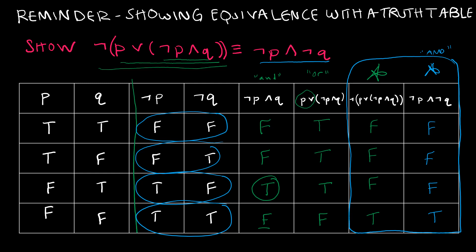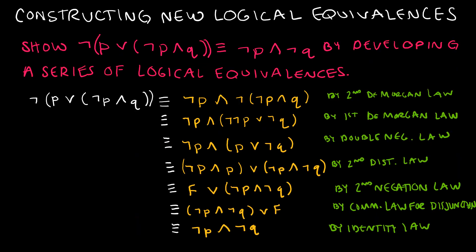Now what I want to do is show you another way to prove that. Now I want to take a look at the exact same example and I want to show you how we can construct this new logical equivalence using things that we already know. So this is going to look kind of like a two column proof if you've ever looked at two column proofs before.